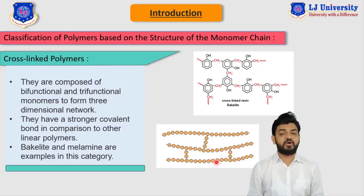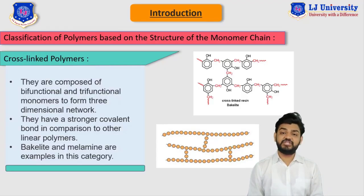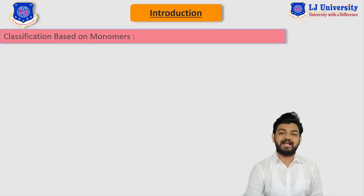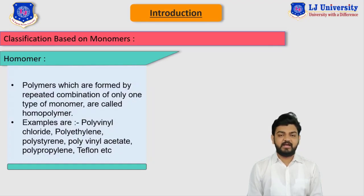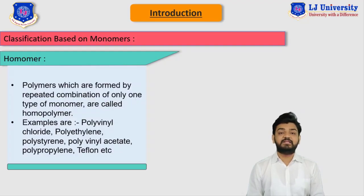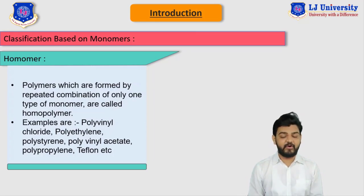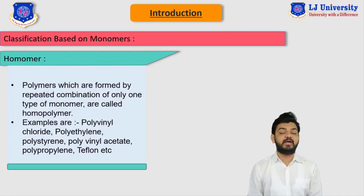That was all about the classification of polymer based on the structure of monomeric chain. Now let's continue our classification of polymer based on the monomer. We can classify polymers based on the monomer into different categories: first is the homopolymer and the second is the copolymer. As the name suggests, homopolymers have similar kinds of monomers joined together with covalent bonds. Polymers formed by repeated combination of only one type of monomer are referred to as homopolymers.